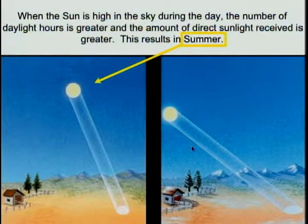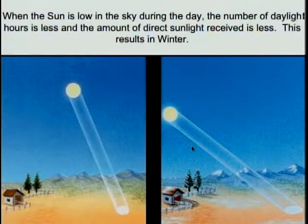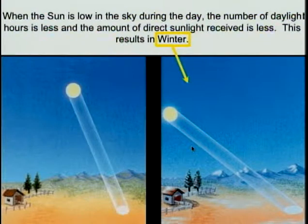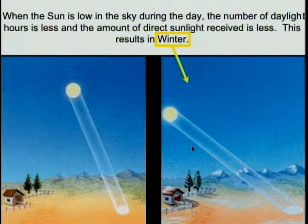So summer is when the Sun is high up in the sky, there are long days, and the rays of light are reaching the ground almost perpendicularly. Winter is when the Sun is low in the sky, the days are shorter, and the rays of light are reaching the Earth at a more inclined angle.